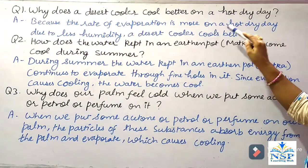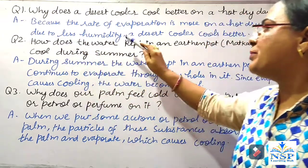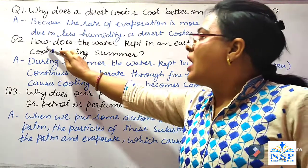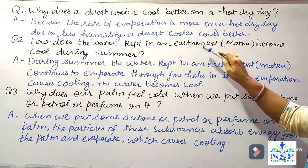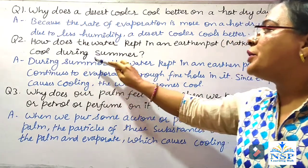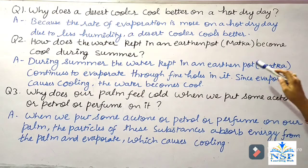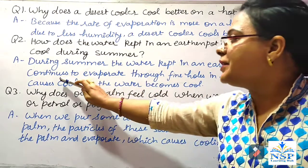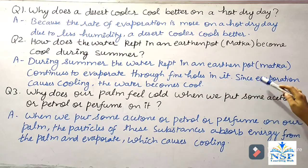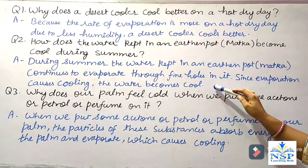The rate of evaporation is more on a hot dry day due to less humidity, which is why a desert cooler cools better. How does water kept in an earthen pot, which is called a matka, become cool during summer? During summer, the water kept in the earthen pot continues to evaporate through the fine holes in it. Since evaporation causes cooling, the water becomes cold.